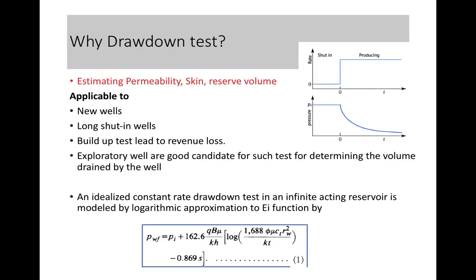Now, what is a drawdown test? It is opposite to the buildup. Initially there is a shut-in before producing the reservoir, and the shut-in has been done to stabilize the pressure. Once the pressure is stabilized, the well is allowed to flow at a constant rate. What we estimate from this test: permeability, skin, and reserve volume. These tests are particularly applicable for new wells and exploratory wells.